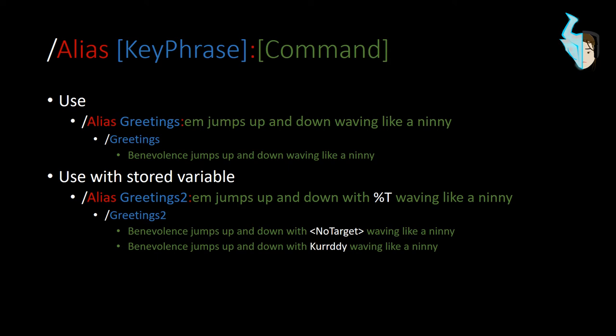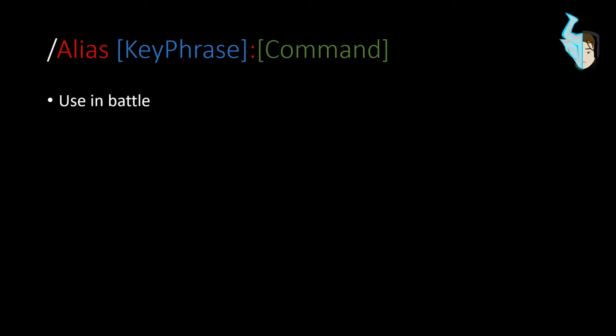Now I can take that wherever I want. Say I go off somewhere else in the game and Curti camps out for the night. I can type '/greetings_to' — or better yet, put it in a macro and hit my greetings button — and it'll still say 'Benevolence jumps up and down with Curti waving like a ninny' even though I'm not targeting him. What the alias command stored is the name of whoever I was targeting at the time I typed the '/alias' command.